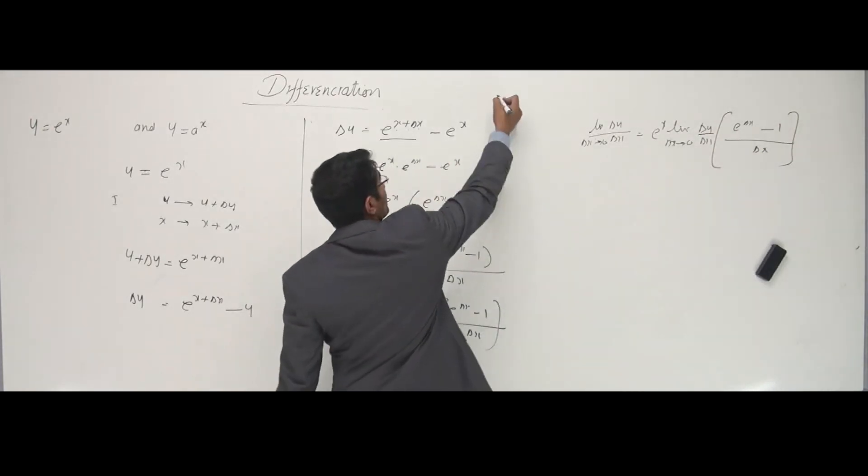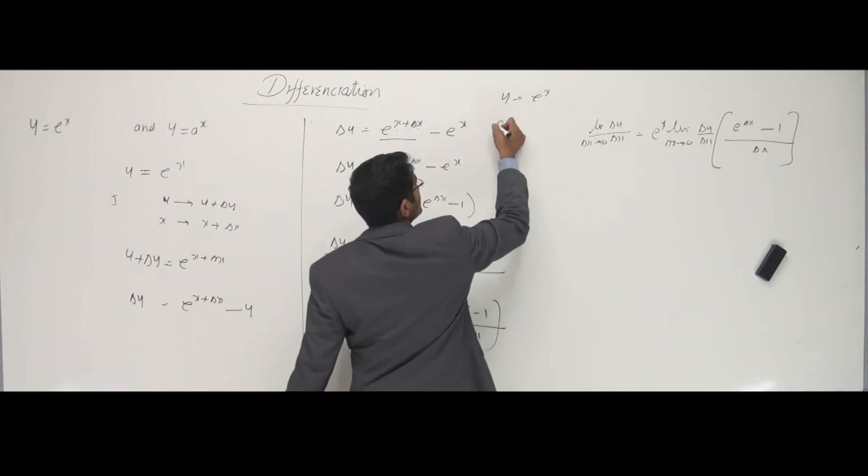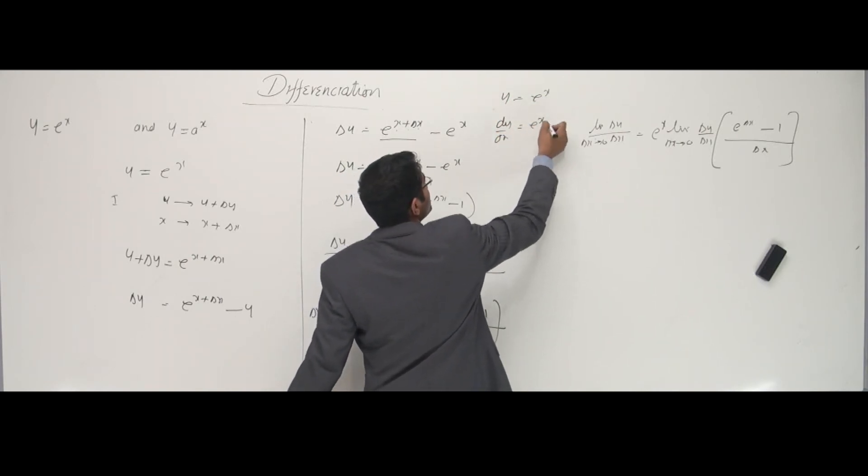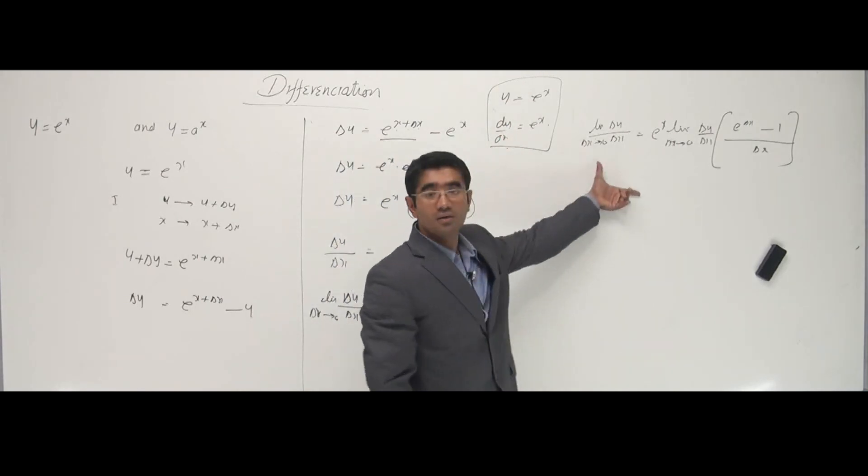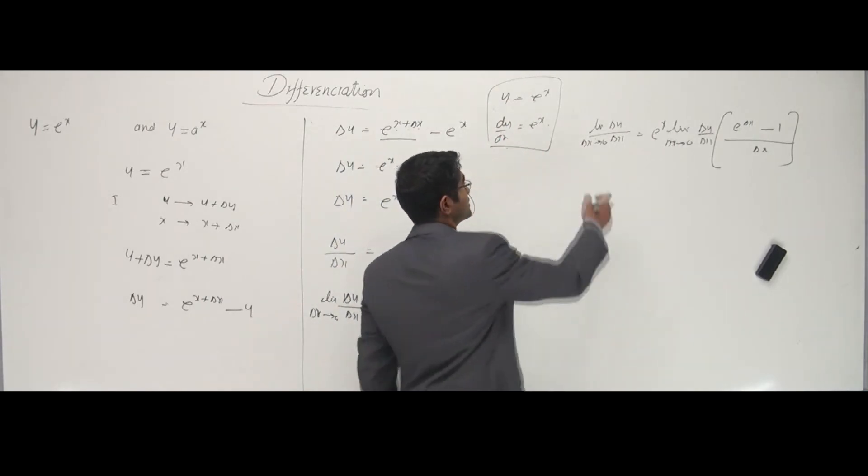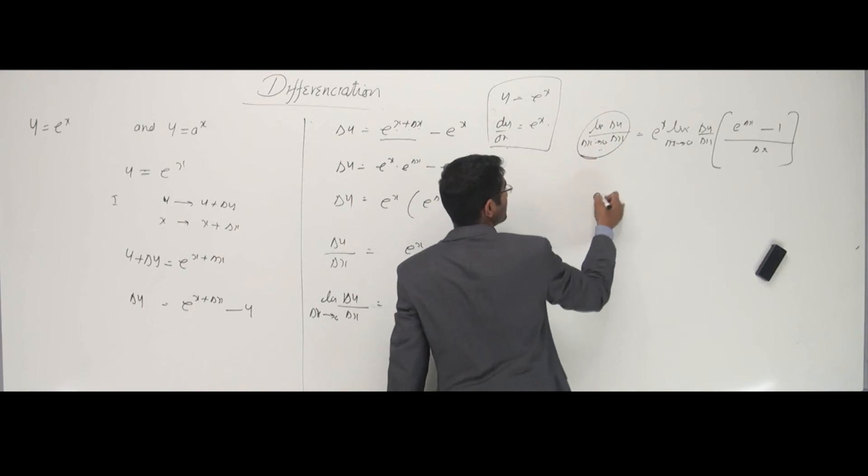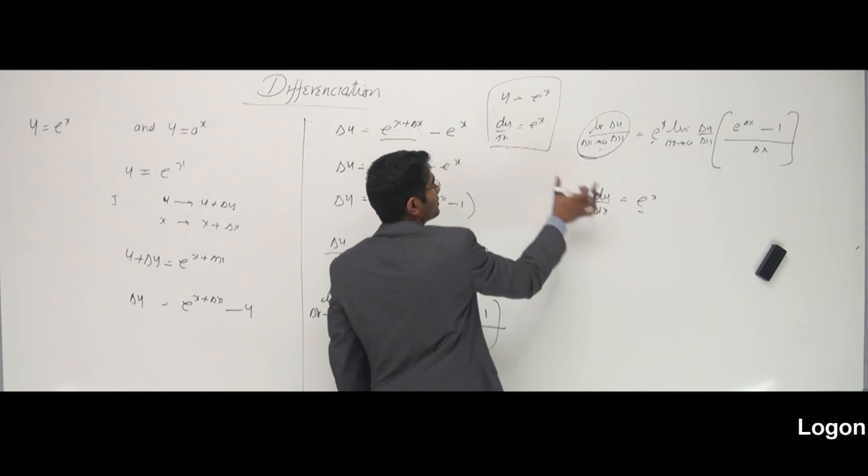Look at this. My answer for the question, y is equal to e power x, was what? dy by dx was e power x only. I can write e power x into 1 also. Now, if this is my answer, compare this to what I have right now. What I have right now is this guy. I can write this guy as dy by dx. And I have e power x also. It means I'm done.